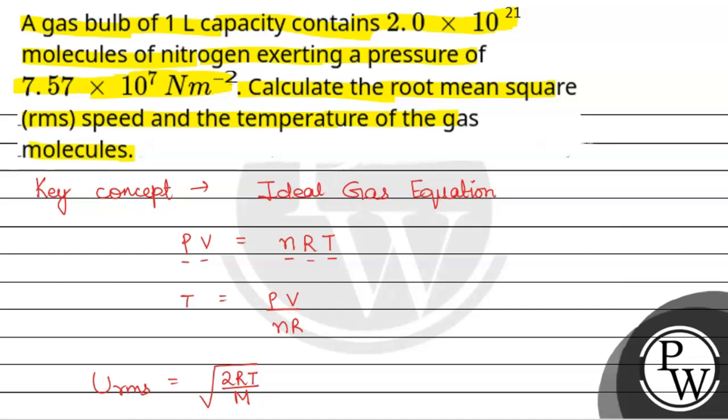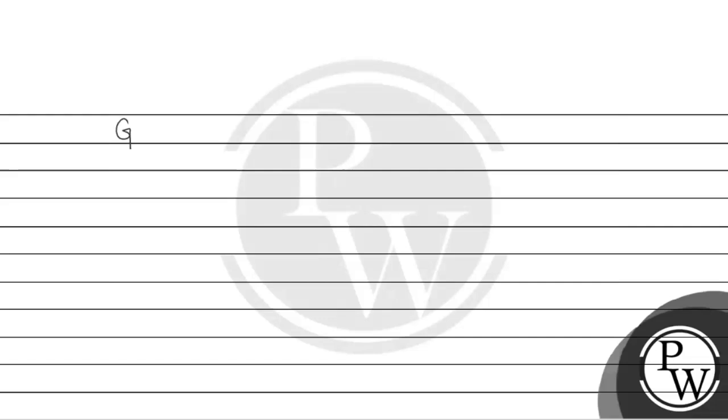Looking at the question, the volume is given as one liter. Since we know that one meter cube is equal to thousand liters, so one liter will be equal to 1 × 10^-3 meter cube. So the volume is 10^-3 meter cube.